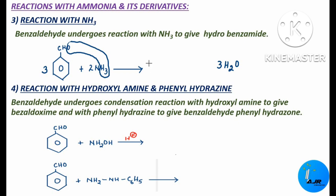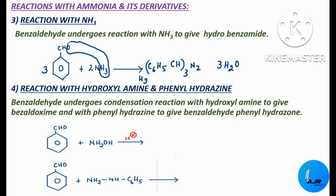The rest we write as (C6H5CH)3N2 — C6H5CH three times and N2. So this is called hydrobenzamide. The product name is hydrobenzamide.